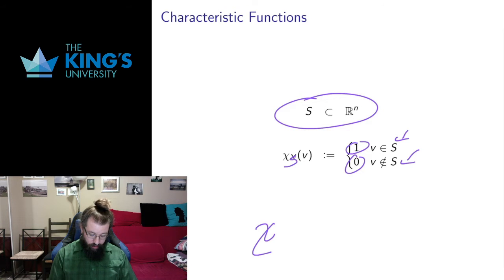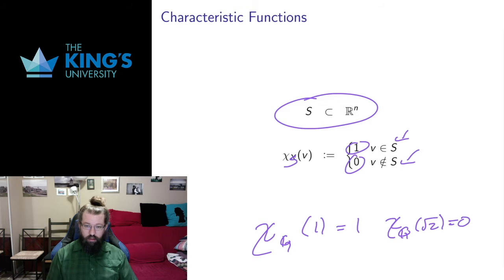So if I had χ of the rational numbers acting in the subset of the real numbers on the number line, if I act on one I would return one because one is in fact a rational number. If I act with χ of the rational numbers on √2 it would return zero because √2 is not a rational number. So it's just a function that identifies whether or not we are in a certain set.